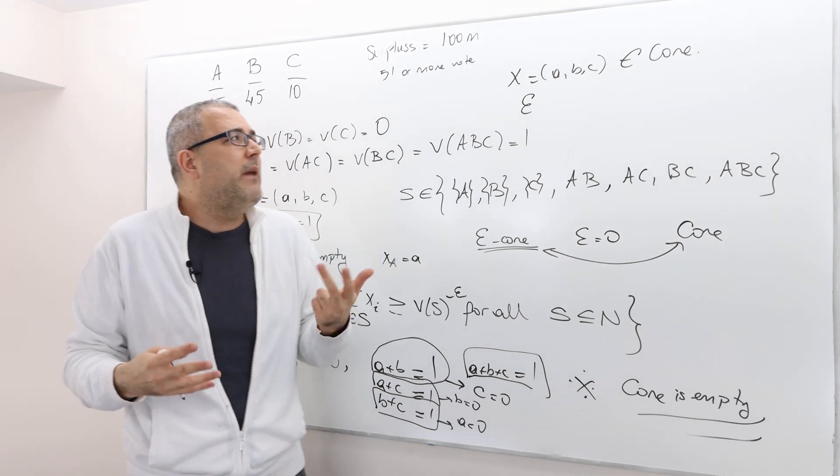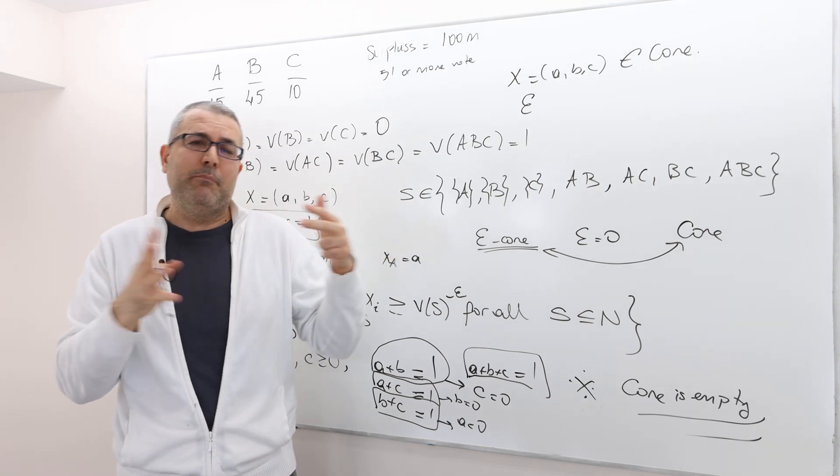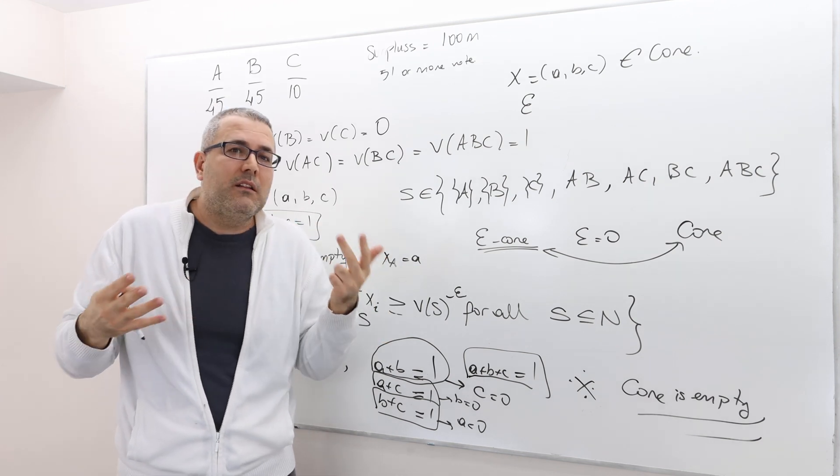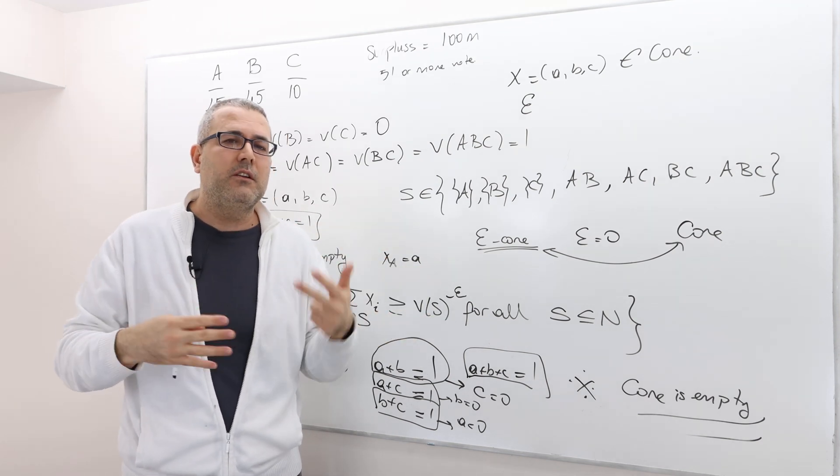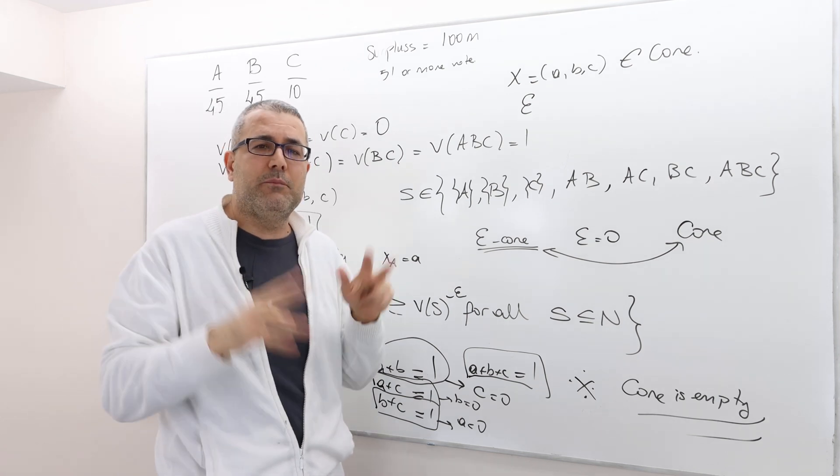And so we may actually work with epsilon core payoff vectors because it's not the best. We don't have the best solution. We have sort of better alternatives. So epsilon core is basically the idea of providing these better alternatives.